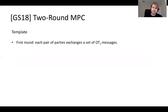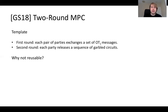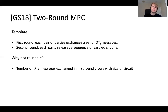Our starting point is the GS18 approach to two-round MPC. In the first round, each pair of parties exchanges a set of OT1 messages between themselves. In the second round, each party releases a sequence of garbled circuits, which are used to communicate among themselves in computing a multi-round MPC protocol. What's more important is understanding what's going on in this first round, so we ask: why is the GS18 protocol not already reusable?